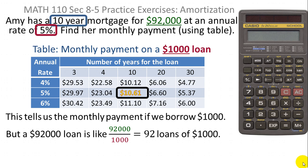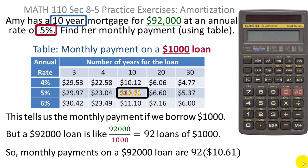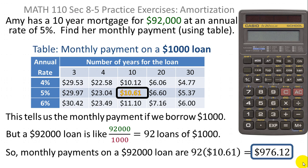It's as if she took out 92 loans worth $1,000 each. To calculate the actual payment, divide the mortgage amount by $1,000 to find how many $1,000 loans were taken out. Taking a $92,000 loan is equivalent to that. So we take 92 times the monthly payment of $10.61. She has to pay back $10.61 ninety-two times each month, which comes out to $976.12. So if Amy borrowed $92,000 at 5% for 10 years, her monthly payment is $976.12.